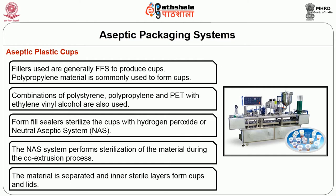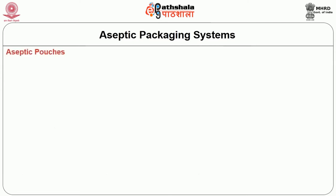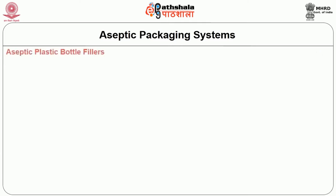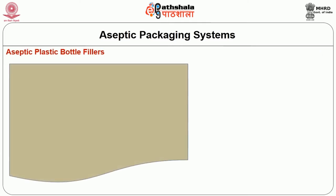The material is separated and the inner sterile layers form cups and lids. Aseptic pouch form-fill-sealing machines are commonly used as aseptic pouch fillers for pouch formation. Generally, the aseptic pouch materials are treated with 35% hydrogen peroxide and further dried in hot air for sterilization.